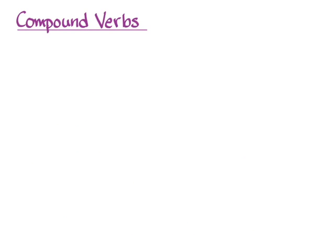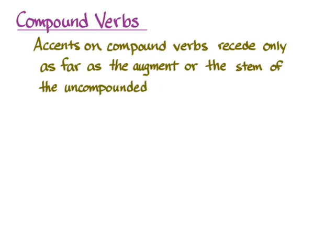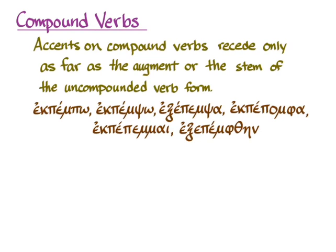There are a couple of other things we have to learn about compound verbs. The first is a big rule about accents, which is that they cannot go back onto the prefix. So accents on compound verbs recede only as far as the augment or the stem of the uncompounded verb form. That was really not a big deal in the verbs I've shown you so far, as with 'ekpempo' — because the stem verb is long enough, the accent doesn't want to go back onto the prefix.